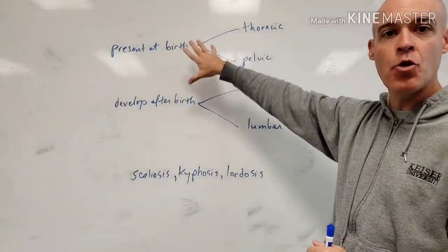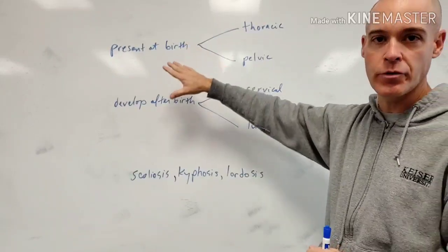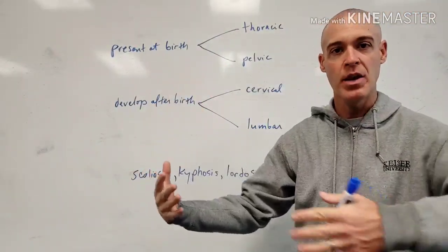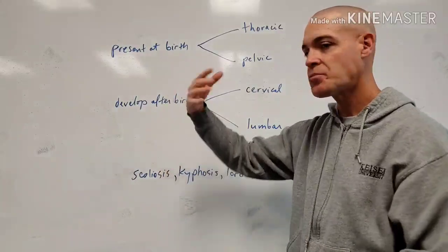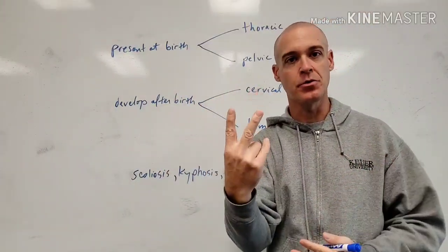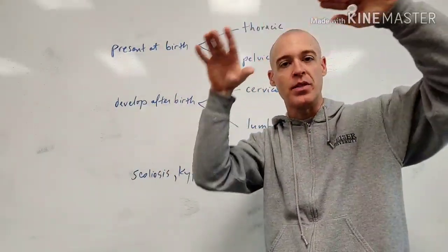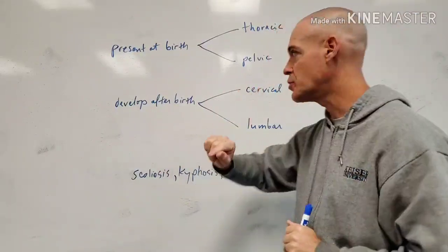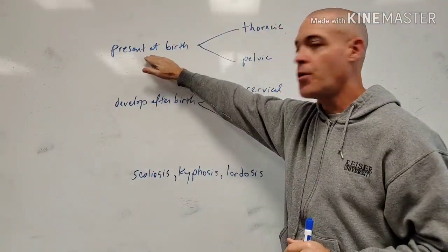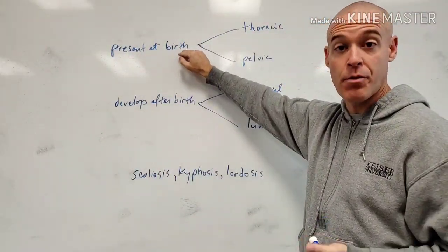So real quick, on the normal curvatures, we have two curvatures that we're actually born with. So when a baby comes out of the womb, there are actually two curvatures that the baby already has within its spine. Two spinal curvatures. Notice, again, I wrote it here that they're present from birth or at birth.